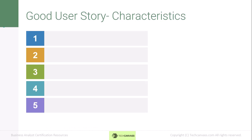There are always certain guidelines for any sort of documentation, and similarly there are certain rules for writing a good user story. The first rule is it should be written in active voice. For example, 'As an online buyer, I want an invoice on my email' is active voice. The same in passive voice would be 'The invoice should be sent on the email ID of the online buyer' — this type of passive voice formation is not appropriate for a user story.